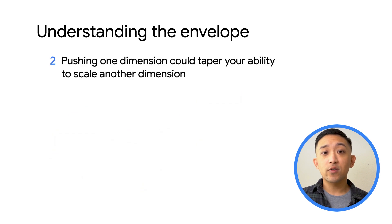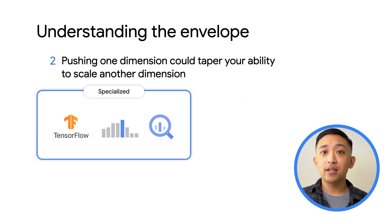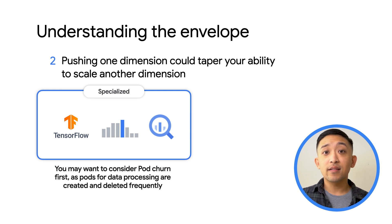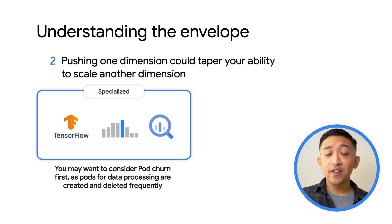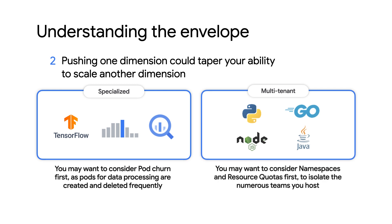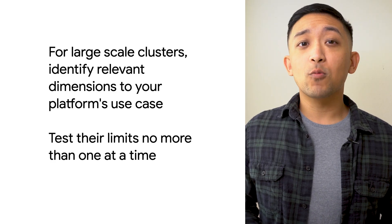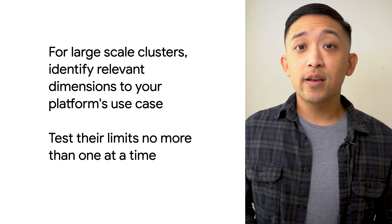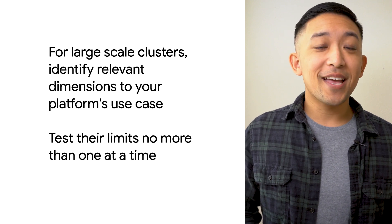Scaling to the maximum in any one direction can taper your ability to scale across other dimensions, so it's important to think about what resources your platform could push to the limit. A highly specialized cluster to serve as a batch processing platform, for example, might have numerous pods being created and deleted at the same time depending on the status of jobs that are running — and this will affect pod churn. A multi-tenant enterprise platform might have hundreds of workloads across hundreds of teams, each isolated to their own set of namespaces. It's important to plan around what is most critical to make your platform work for your users, and to test those dimensions one at a time and independently.